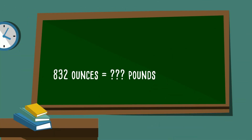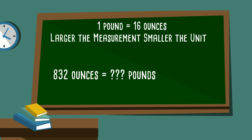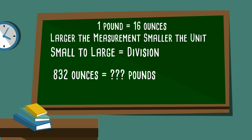Let's look at this one: 832 ounces equals how many pounds? Our hint is one pound equals 16 ounces. We're moving from ounces to pounds — the larger the number for the measurement, the smaller the unit — so we're going from small to large, meaning we divide. 832 divided by 16 equals 52 pounds.